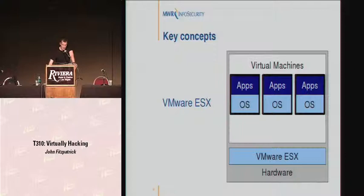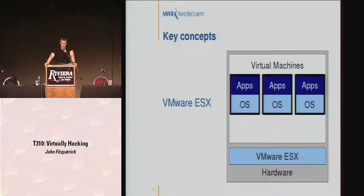ESX is slightly different — essentially ESX is the operating system. By running ESX, you strip out one layer of complexity. Your virtual machines can talk to ESX, which can talk directly to the hardware. So if you want to give 2GB of RAM to a virtual machine, it has no operating system to contend with for that RAM — it talks directly to ESX, which gives it the RAM it wants.